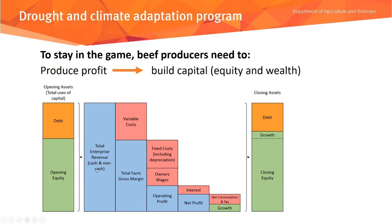Those opening assets are applied to produce revenue. Revenue can be cash and non-cash. Out of total enterprise revenue, we take out the costs that vary with the amount of production — variable costs — which gives us a total gross margin. Out of the total farm gross margin, we take out fixed costs, such as operating overheads of the property, and an allowance for what the owners should be paid as fair recompense for their labour.